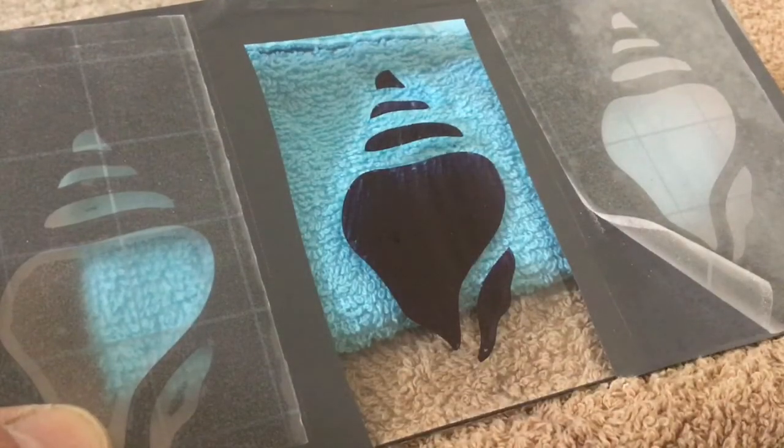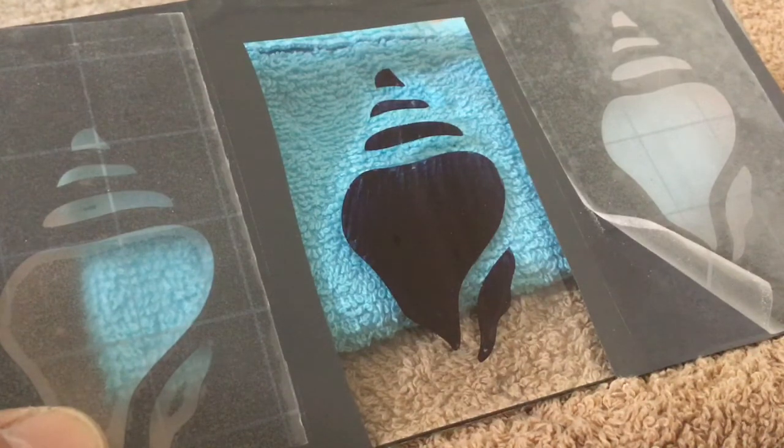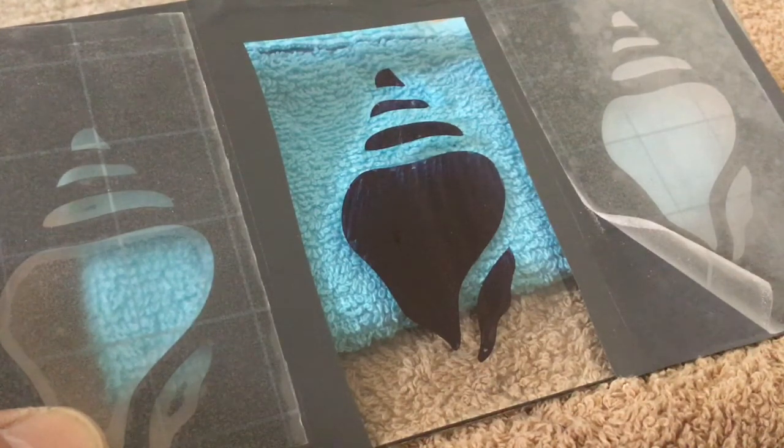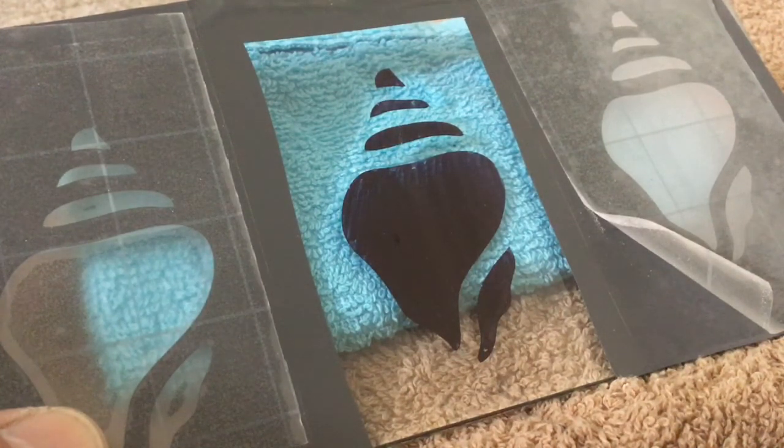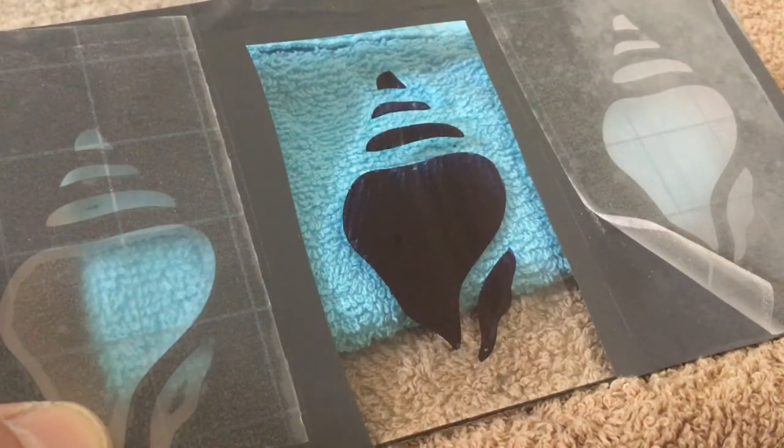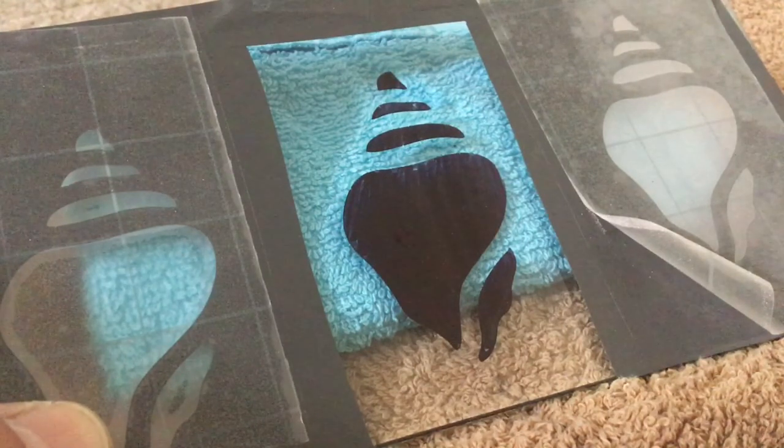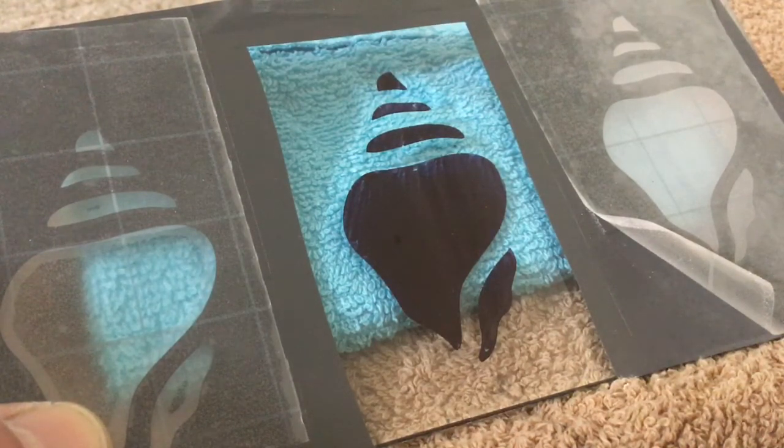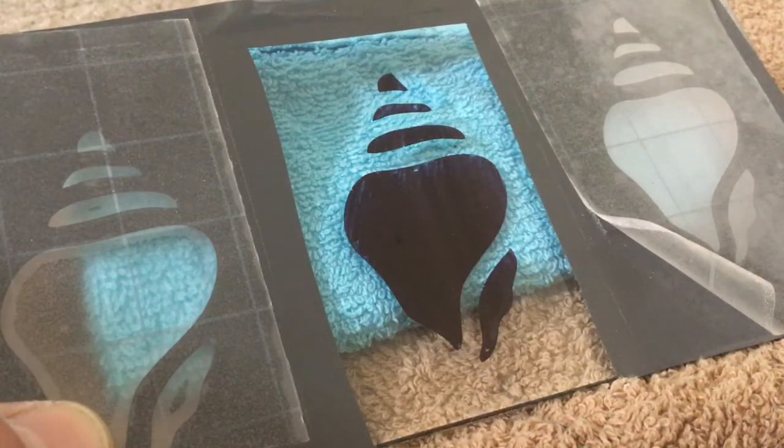I'll get started on the engraving side of things. I'll turn my Dremel on. We'll probably end up speeding up this bit of the video, but first off we'll do an outline of the pattern and then we'll fill in.